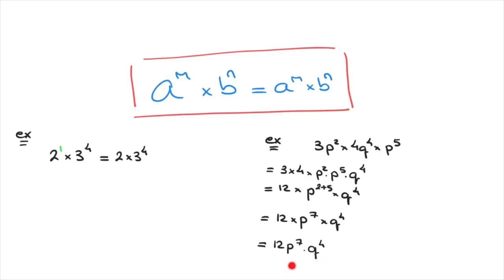This rule tells us we must stop here — we cannot go any further. In particular, we cannot multiply the two bases p and q, and we cannot do anything with their respective exponents. We cannot add the power of 7 to the power of 4, nor do we multiply them. This is as far as we can go in the simplification.